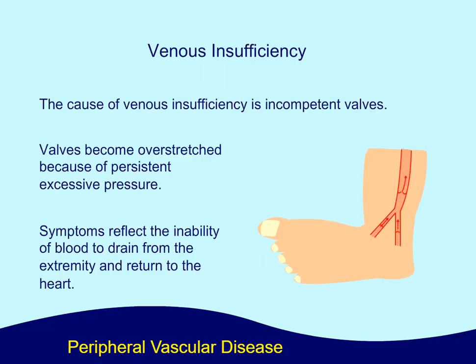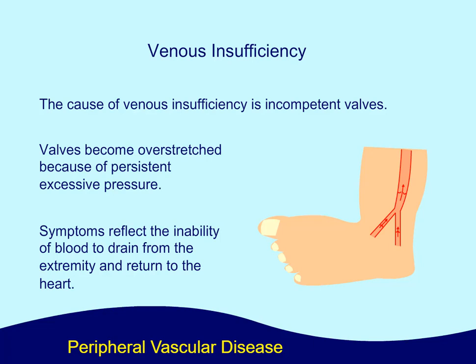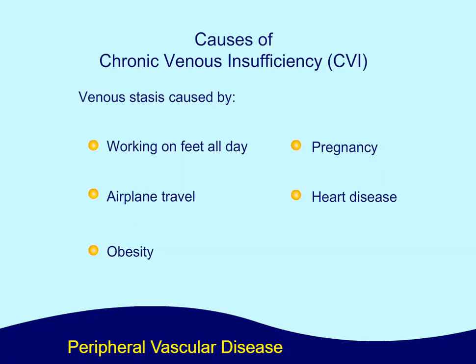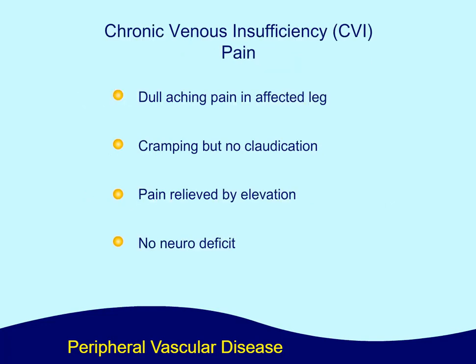Venous insufficiency. The cause of venous insufficiency is incompetent valves. Valves become overstretched because of persistent, excessive pressure. Symptoms reflect the inability of blood to drain from the extremity and return to the heart. Causes of chronic venous insufficiency, or CVI, include venous stasis caused by working on feet all day, airplane travel, obesity, pregnancy, and heart disease. Pain includes a dull, aching pain in the affected leg, cramping but no claudication. The pain may be relieved by elevation, and there is no neurologic deficit.